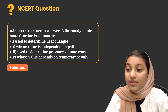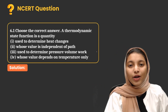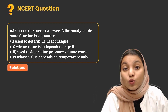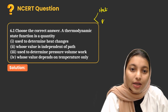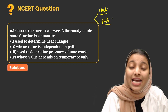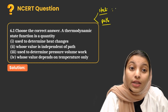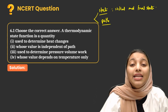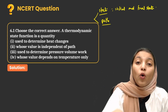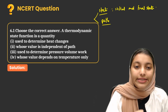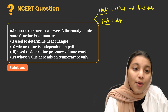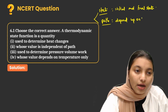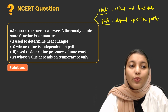Choose the correct answer: a thermodynamic state function is a quantity. In the chapter thermodynamics, we have two types of functions: state function and path function. State functions are the functions which depend only upon the initial and final state of the system, and are independent of the path followed by that system to get to that final state. Path functions depend upon the path by which that state is achieved.